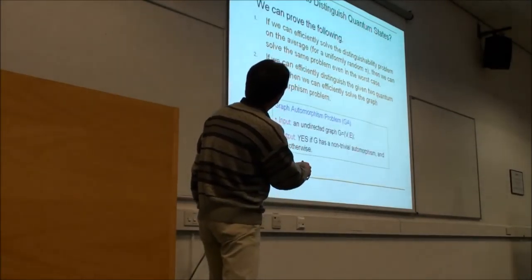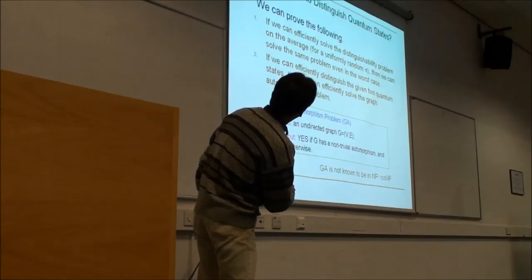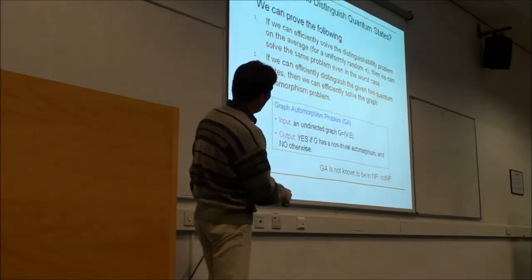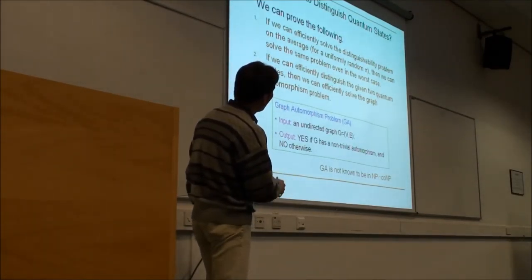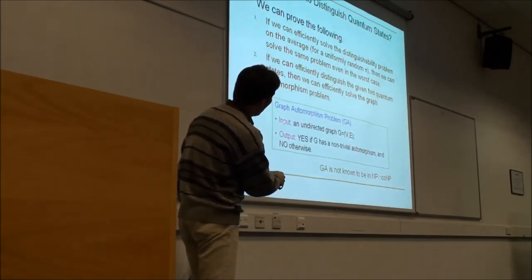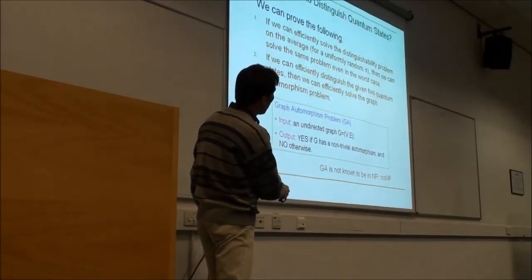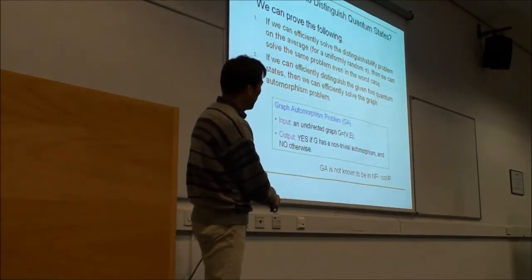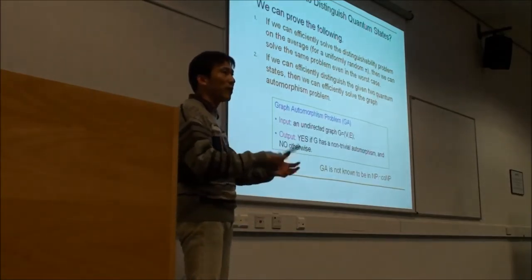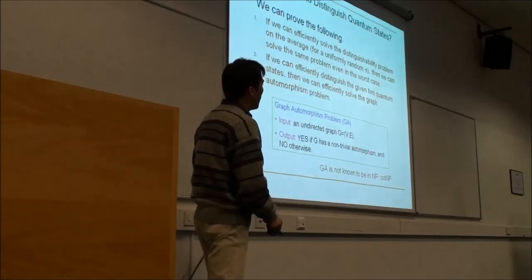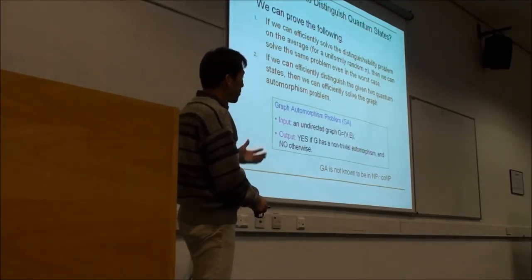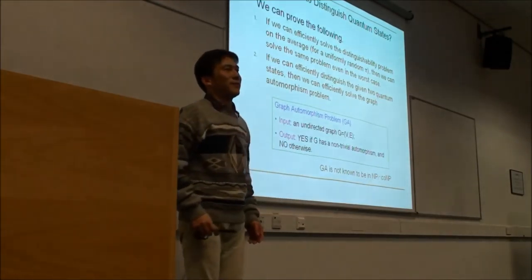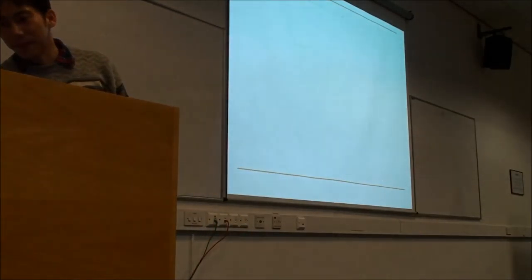Another interesting result: if we can solve the distinguishing problem, then we can solve the classical problem called GA — the graph automorphism problem. Given an undirected graph G, we have to check whether G has a non-trivial automorphism or not. This is a special case of the graph isomorphism problem. GA is not known to be NP-intermediate — it's known to be in NP, but it's not known to be in P even if NP is not equal to P, so it sits much higher above P.